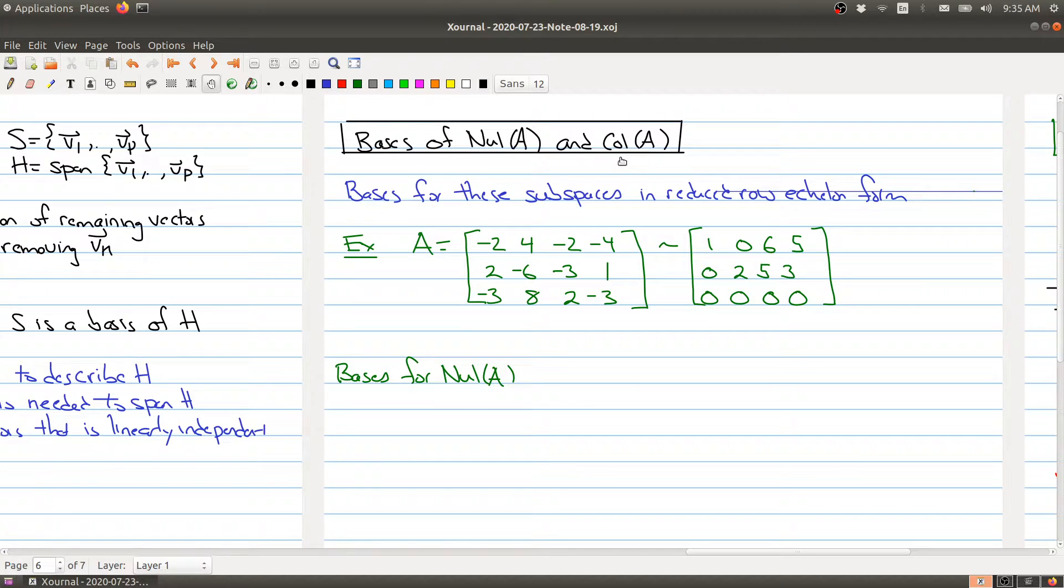We have a system of linear equations and a matrix, and we've seen that this matrix will define two subspaces: the null space and the column space. What we want to be able to do is have bases for these, because the whole point is the basis is the efficient way of describing these sets. So I want to describe how to get this information about the basis for these subspaces.